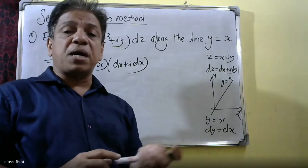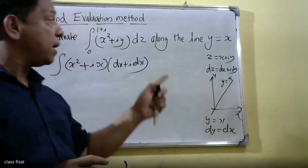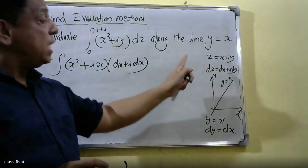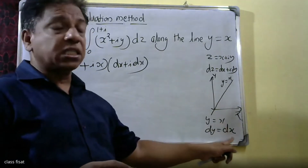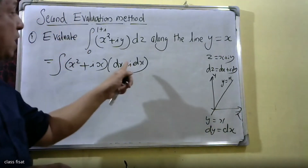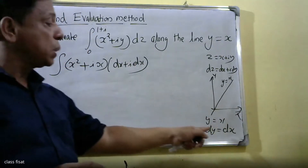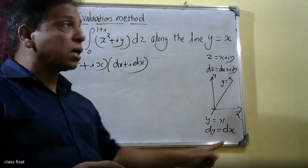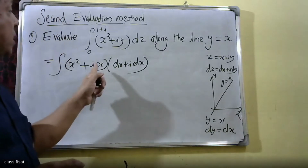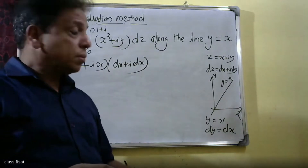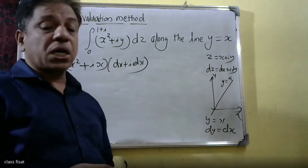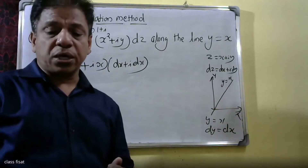Along the line y is equal to x, we have dy is equal to dx. So substituting y equals x throughout, the integral simplifies using this condition.